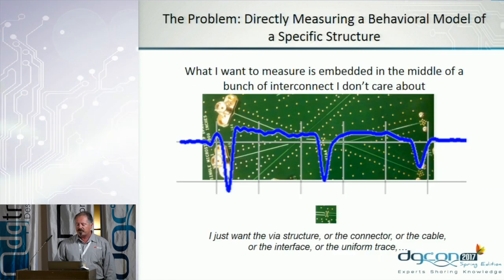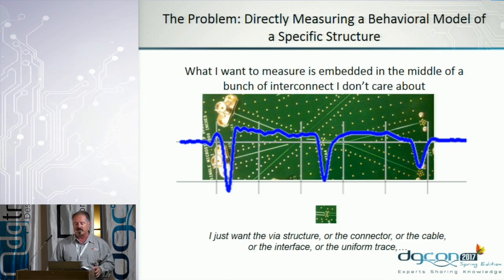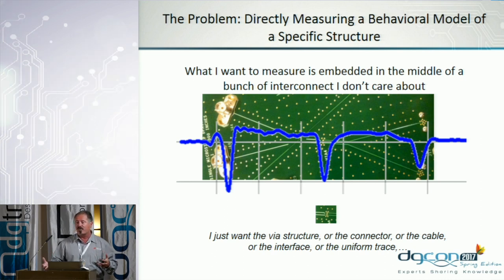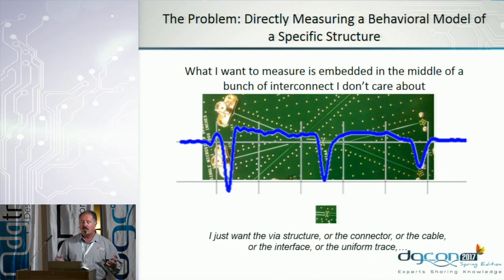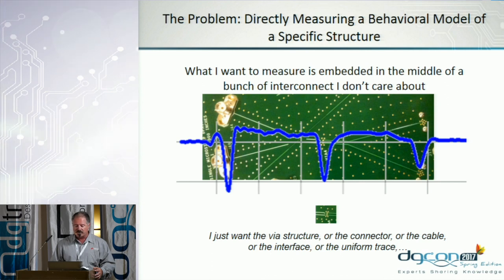One of the difficult problems in building a channel model is measuring a specific structure — like a connector — that's in the middle of a lot of other things you don't care about. For example, vias are a critical part of a channel that we wish we didn't have to have, but we must live with them. In this case, the via is in the middle of FR4 PCB material with very high loss, and then SMA connectors on either side where there's a coaxial-to-planar transition that may give big reflections — all of these cause headaches for high-speed signal propagation. So how do we focus in on just that one small structure we want to characterize?